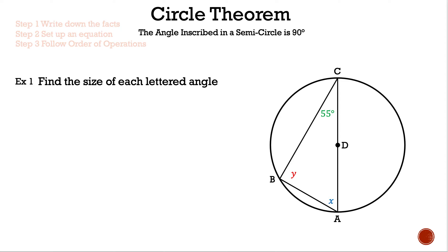Example one: find the size of each lettered angle. The image gives us three measurements: 55 degrees, x, and y. Fact one: x + y + 55° = 180°, for triangle ABC.